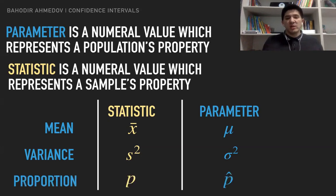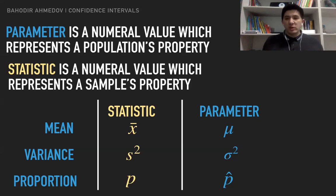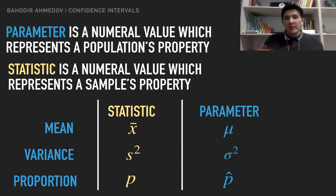From a notation standpoint, we denote parameters and statistics differently. The sample mean is denoted as x-bar, while the population mean is denoted as mu. The sample variance is s-squared and the population variance is sigma-squared. The sample proportion is p, and the population proportion is p-hat. What we would like to do is estimate the population parameter — the mean, variance, or proportion — and one of the easiest and most logical ways is to take a sample, calculate the same numerical property of the sample, and say the population parameter equals the sample statistic.